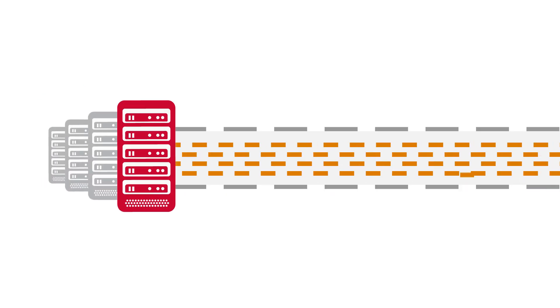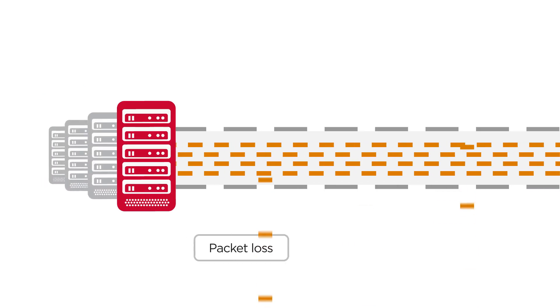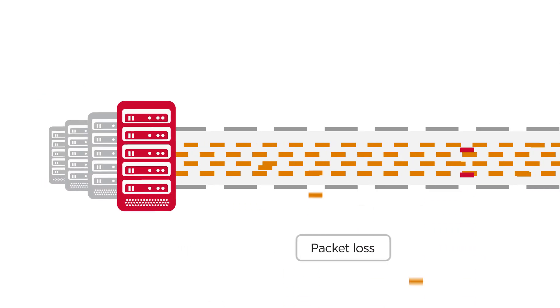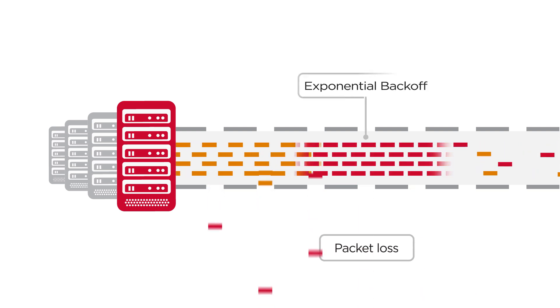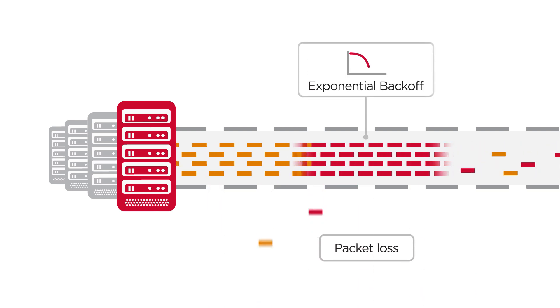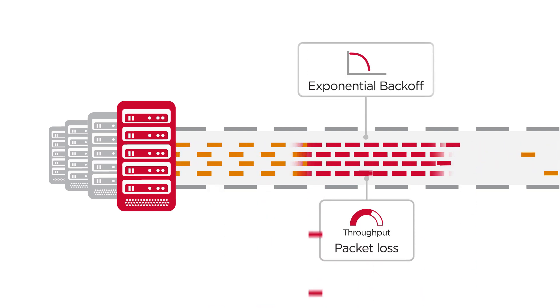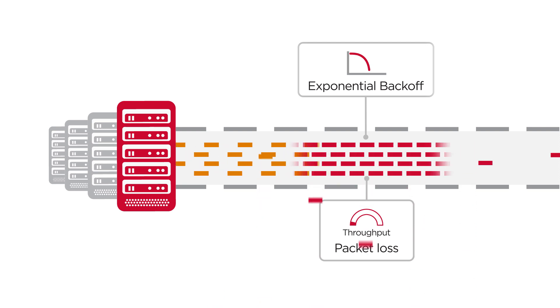Replication throughput is further reduced by packet loss, which every WAN experiences. Protocol response to packet loss is exponential backoff, which can reduce throughput by 90% or more.